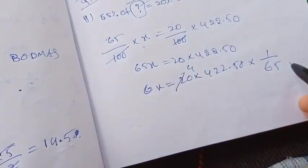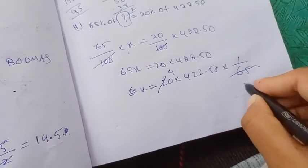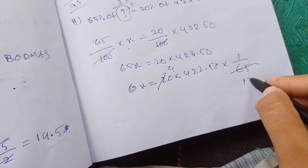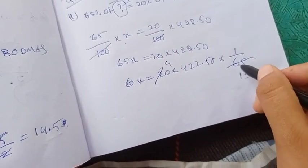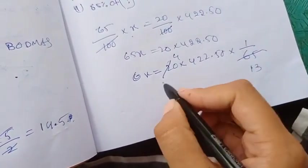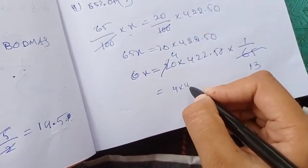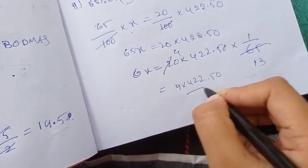The 5 table will cancel - 65 divided by 5 is 13, and 20 divided by 5 is 4. So we get 4 into 42,250 divided by 13.